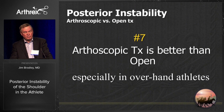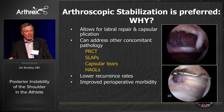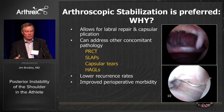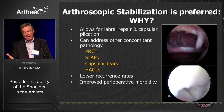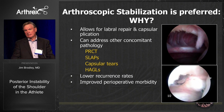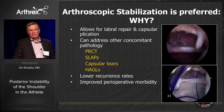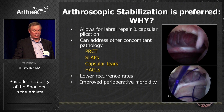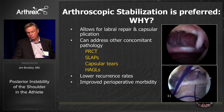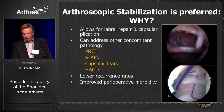The seventh thing we learned is that arthroscopic treatment is definitively better than open treatment, especially in overhand athletes. It's better because it allows you to address concomitant pathology — partial cuff tears, SLAP tears, capsular tears, Hagl lesions. Recurrence rates in the literature are significantly less for arthroscopic procedures, and there's improved perioperative morbidity.